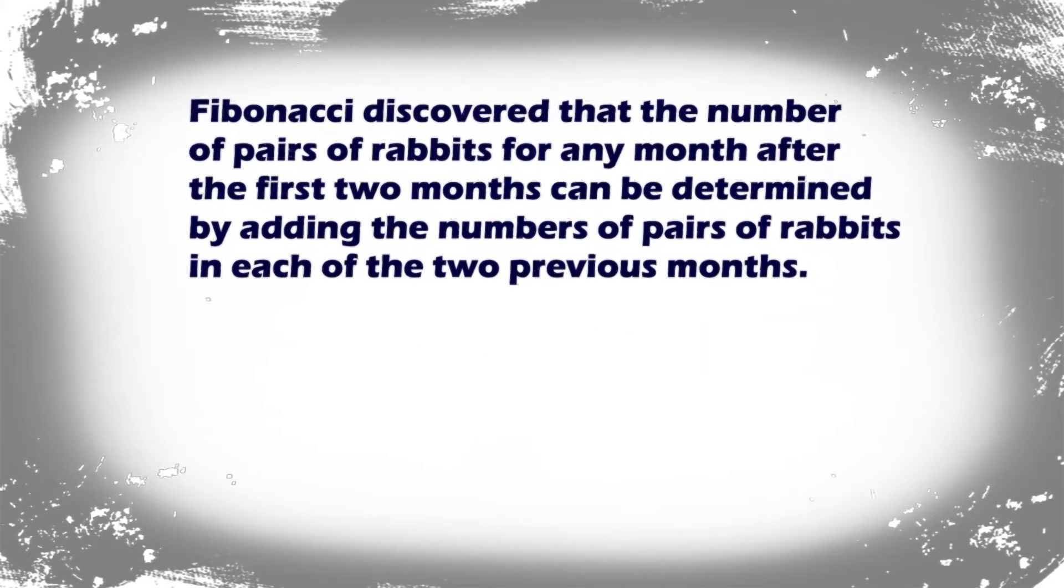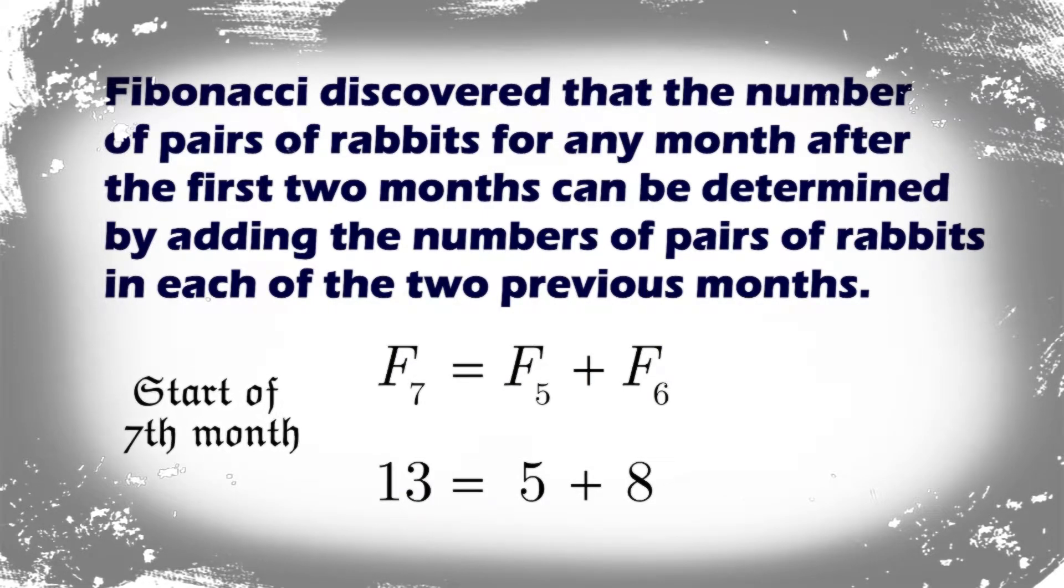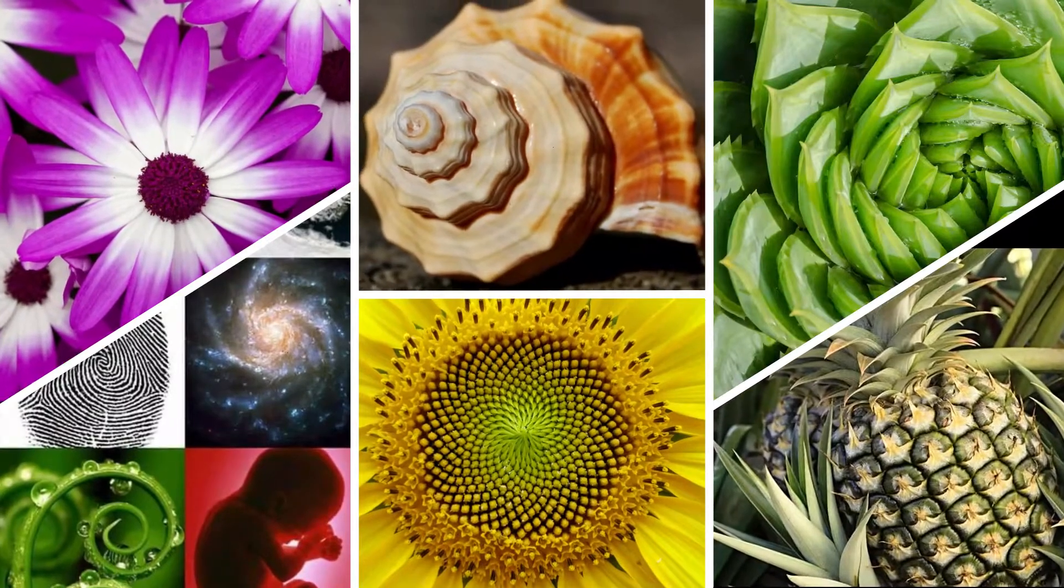Fibonacci discovered that the number of pairs of rabbits for any month after the first two months can be determined by adding the numbers of pairs of rabbits in each of the two previous months. For instance, the number of pairs of rabbits at the start of the seventh month is five plus eight equals thirteen.